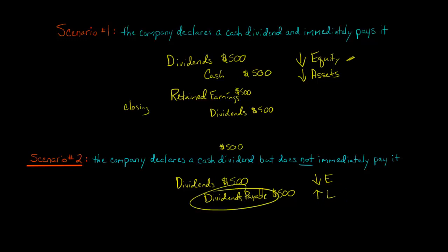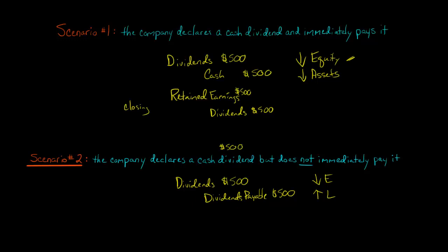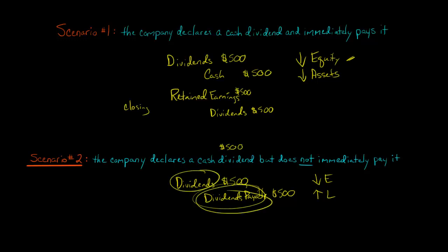This account will throw some students off — people see dividends payable on the balance sheet and say, 'Wait, I thought dividends don't show up on the balance sheet.' They don't — the dividends account does not show up on the balance sheet; it just affects retained earnings. Dividends payable is a different account from the dividends account. Dividends payable is like accounts payable or notes payable — it's saying we declared a dividend and we owe people money, we have a liability and an obligation to sacrifice resources at some point in the future.